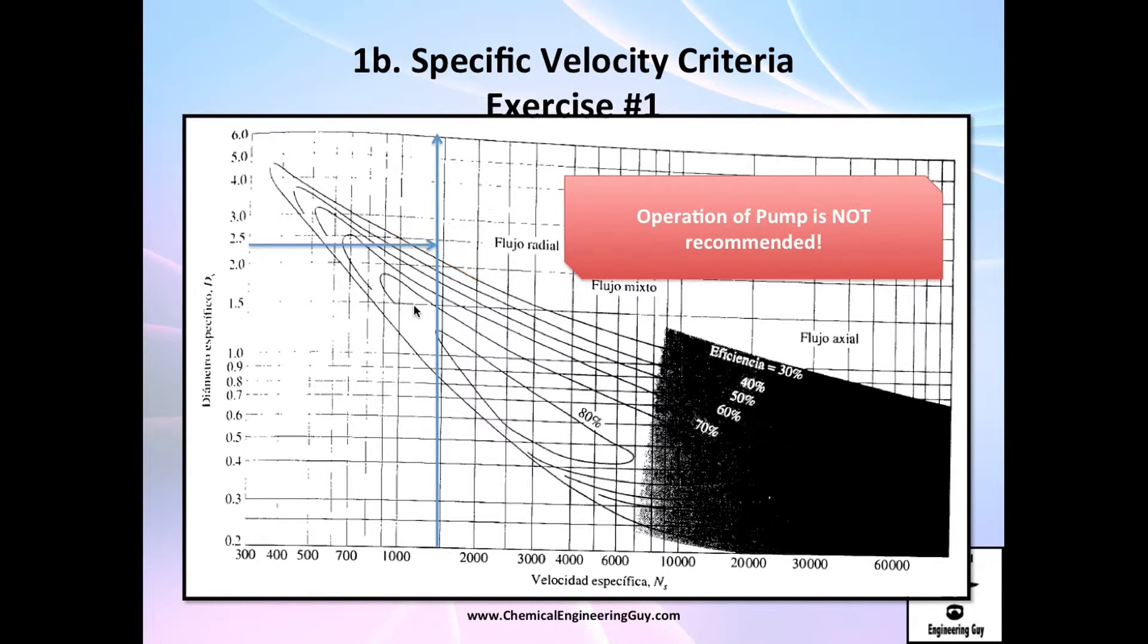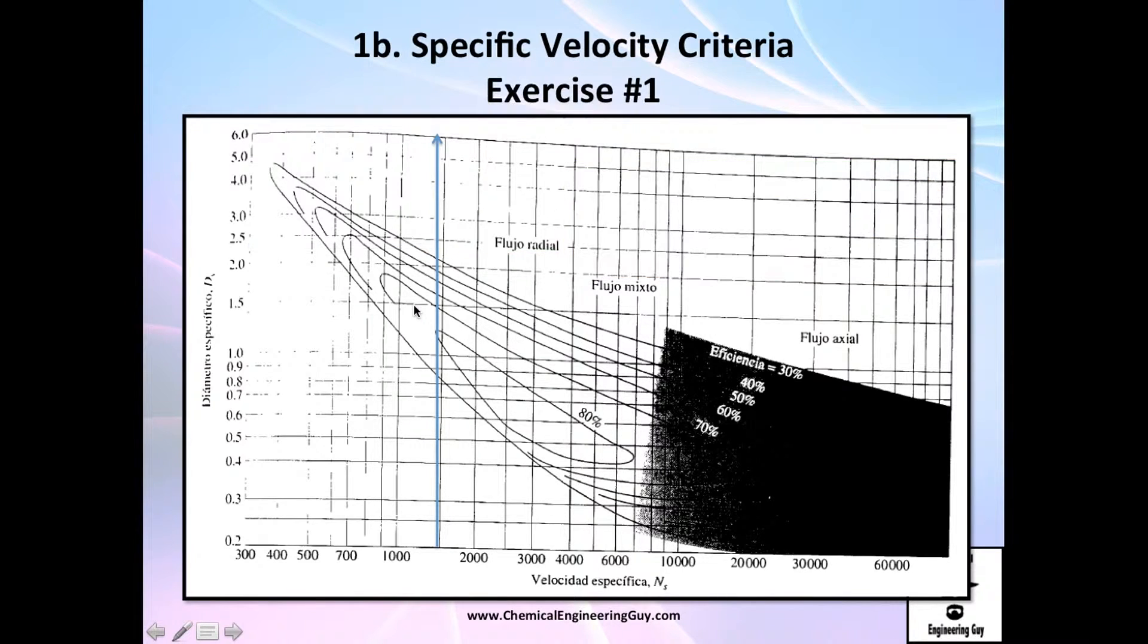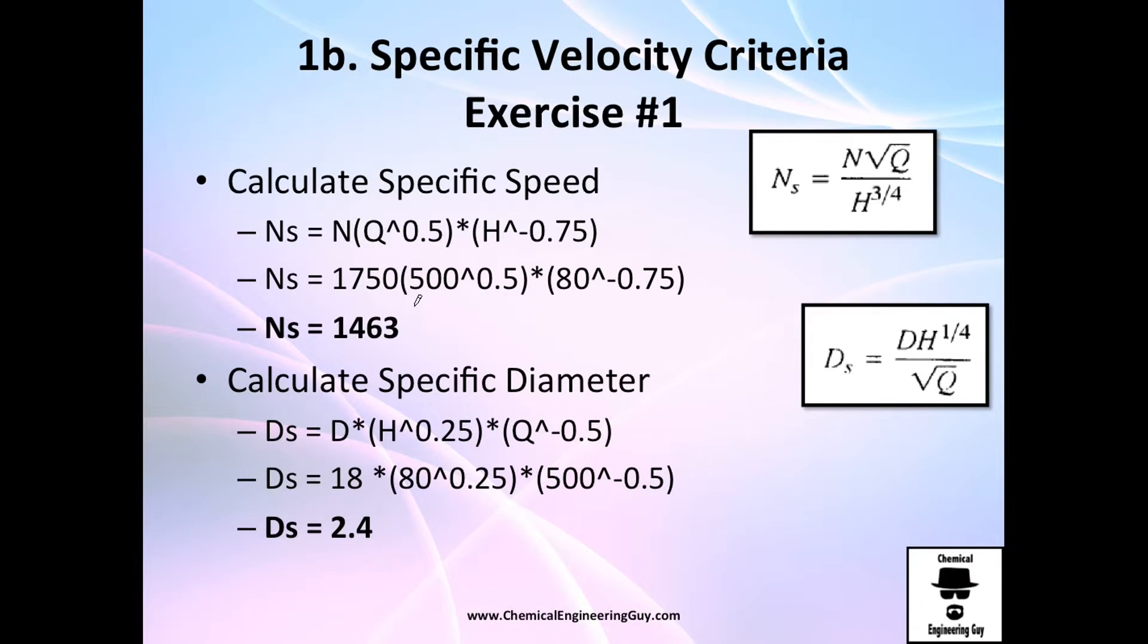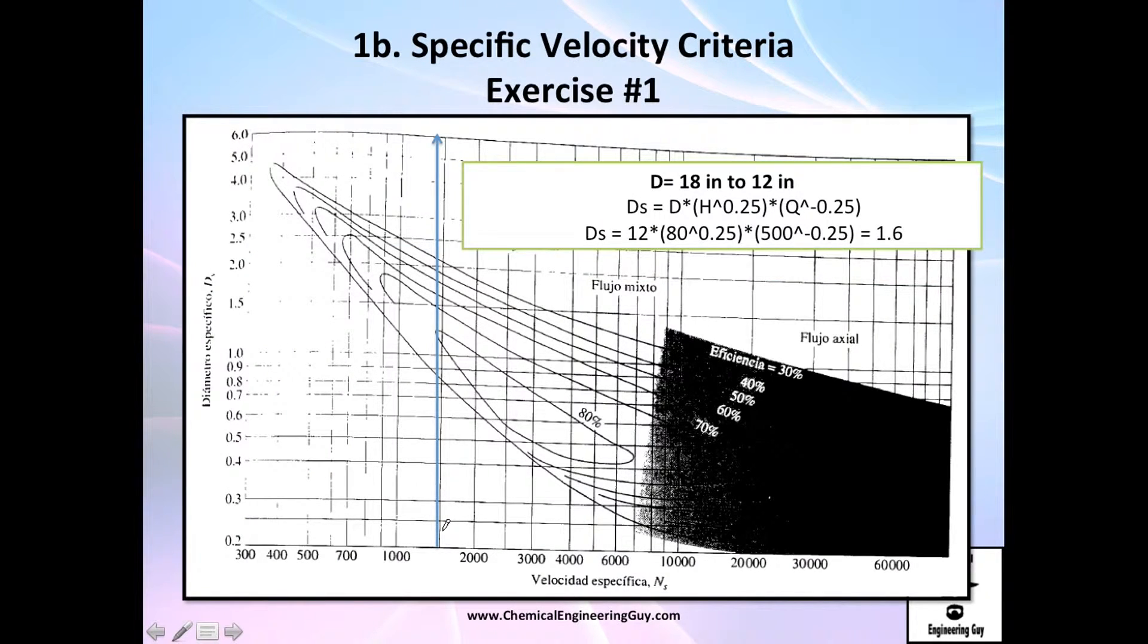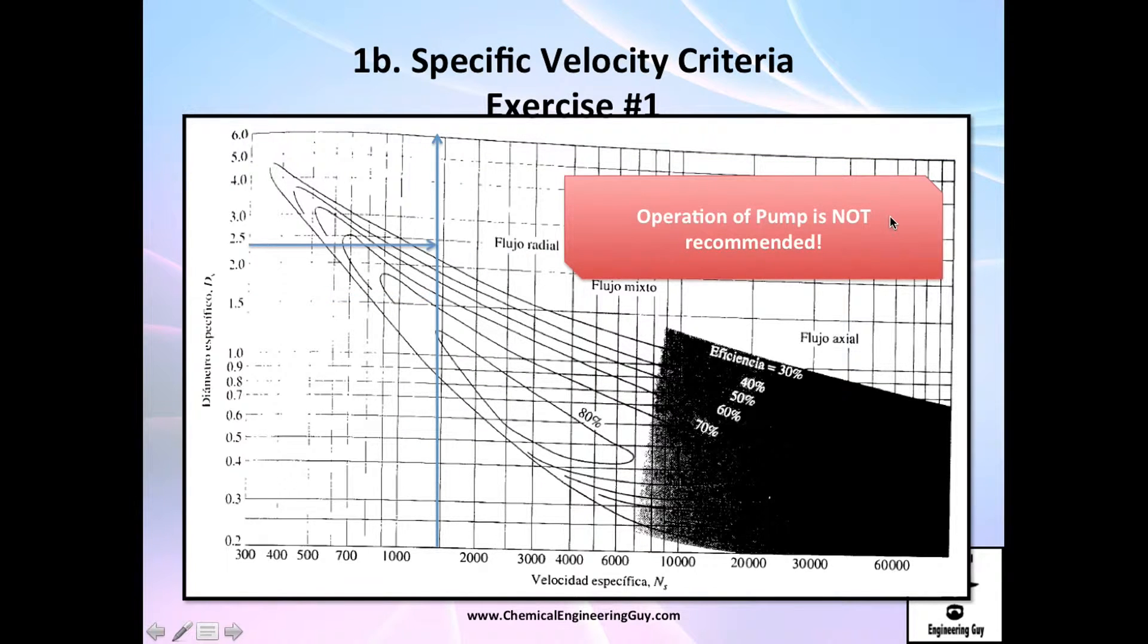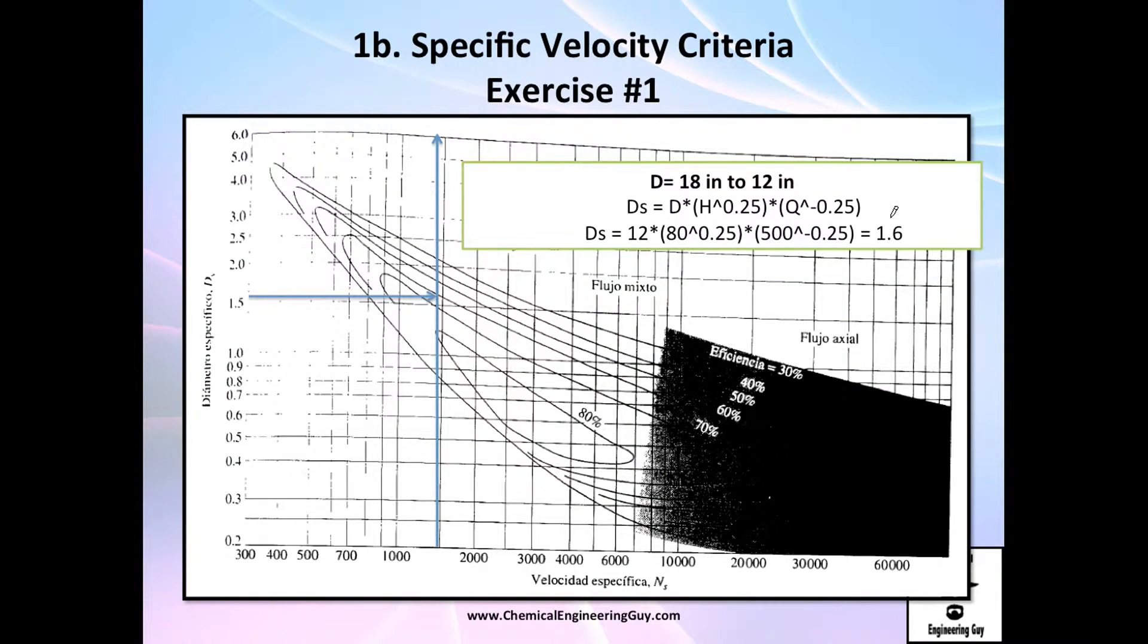So one thing that we can do is to reduce the size of the diameter. Recall that we got 18 inches. So what would happen if we use 12 inches. Let's do that. 12 inches instead goes here. And I found out that my new specific diameter is 1.6. So from this point, now I got it inside.